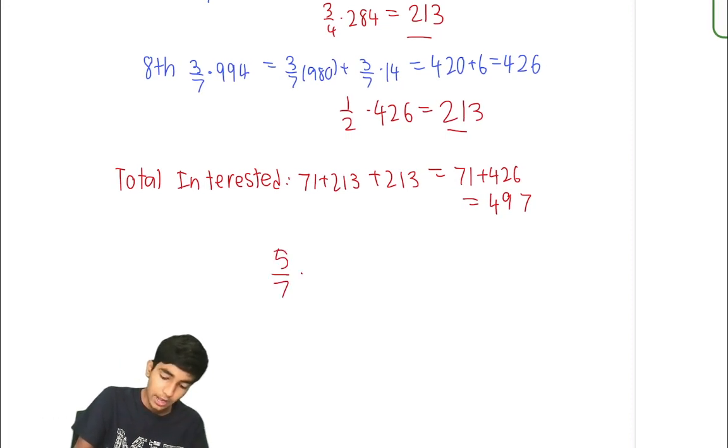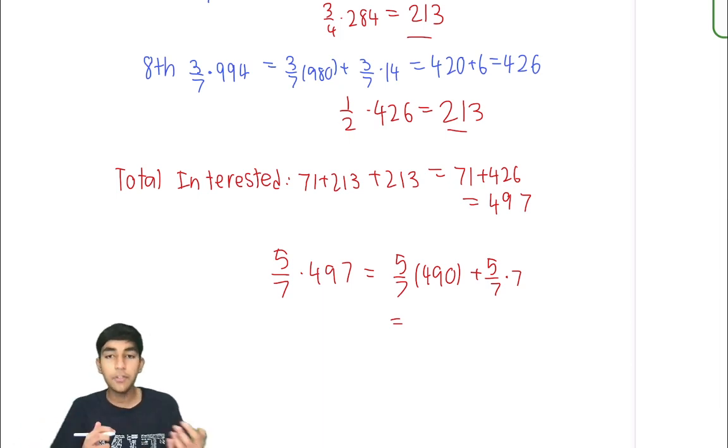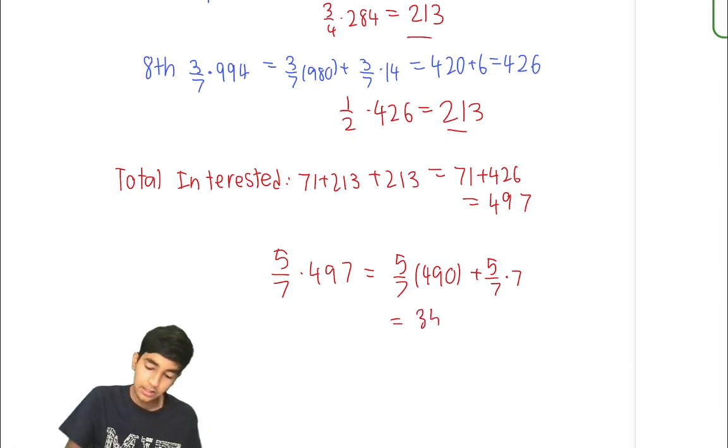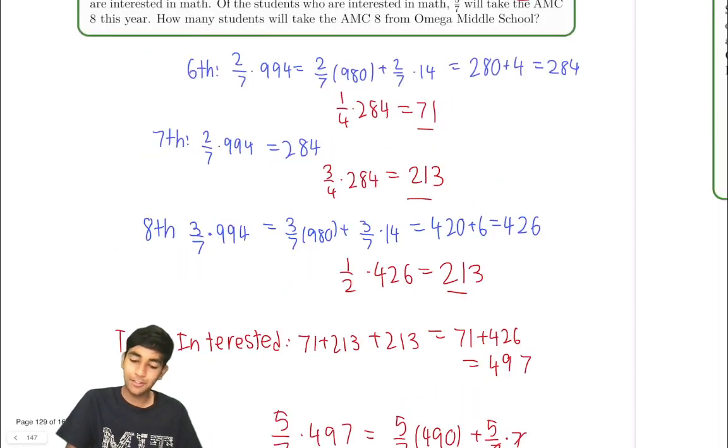Five sevenths of them are going to take the AMC 8. Five sevenths times 497. And another cool trick, like the same trick from earlier. We split up 497 into 490 and 7. This gives five sevenths times 490. 490 divided by seven is 70. 70 times 5, 350. 5 sevenths times 7. Well, the sevens just cancel. Just five. So our answer is just 355. We just work through the ratios and we get our answer.